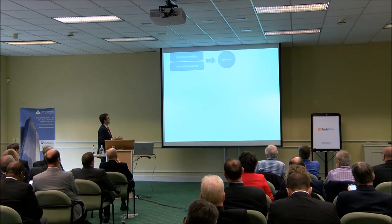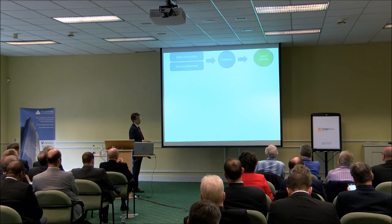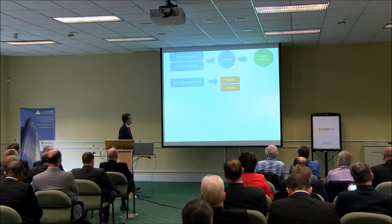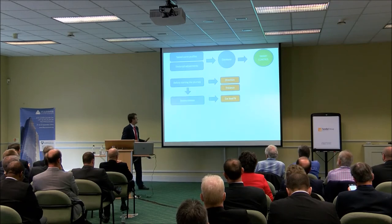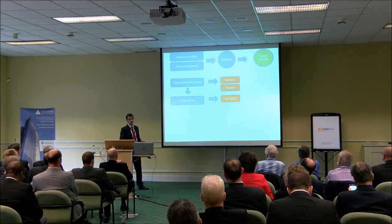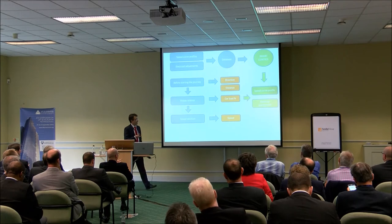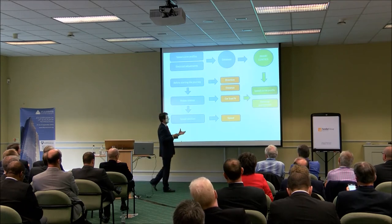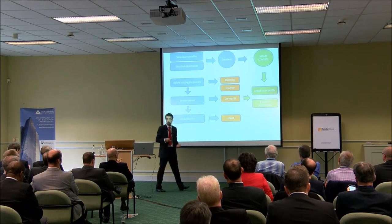We have identified speed profiles and electrical adjustments, and we could generate a database and a smart control. How does it work? The smart control, before starting the journey, already knows the direction and distance. Once the brakes release, we can calculate the car load, choose the speed point for the journey, and then the smart control goes to the database and selects the speed and curve profiles and the electrical adjustments of the variables.